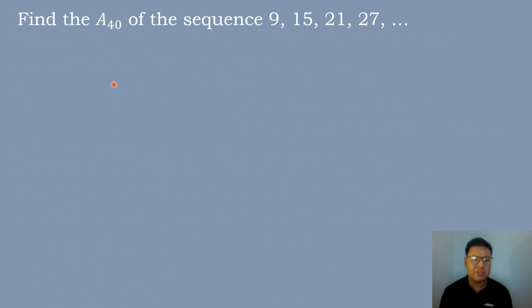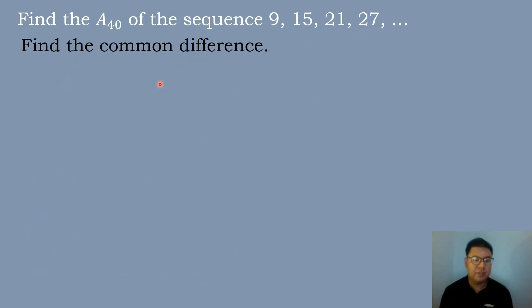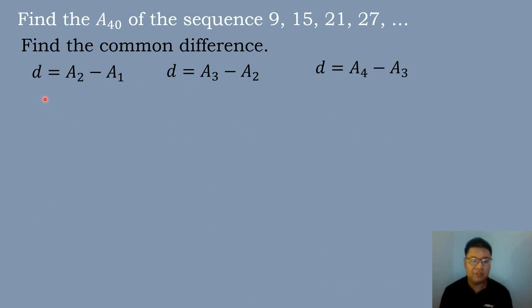So let's now have an example. Let's try to solve the 40th term of the sequence 9, 15, 21, and 27. The first step is to find the common difference. Using the formula: d is equal to a sub 2 minus a sub 1, or d is equal to a sub 3 minus a sub 2, or d is equal to a sub 4 minus a sub 3. All we need to do is substitute the values.